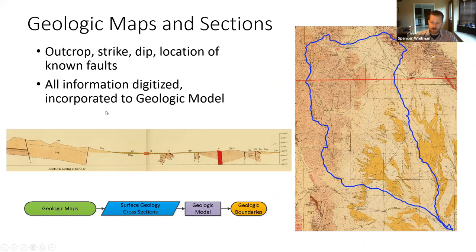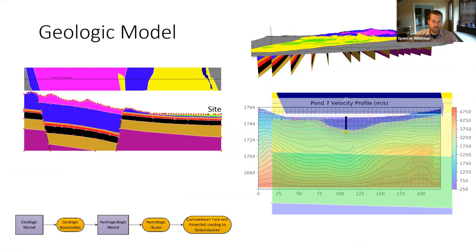Another piece of information we can take advantage of is published geologic maps and cross sections. We can look at the outcrop stripe, dip and location of known faults and geologic units. All this information can be digitized and incorporated into a geologic model using geologic modeling software called GeoModeler. You can see on the top right that this model is composed of many cross sections. On the lower right corner, we're showing a closeup of the tailings cross sections where the boring data is lining up fairly well with the geophysics data.